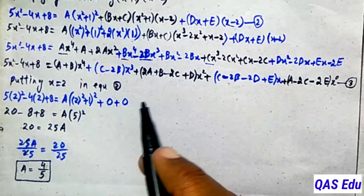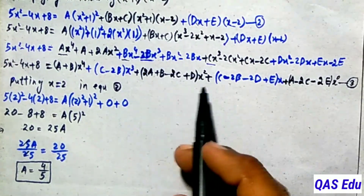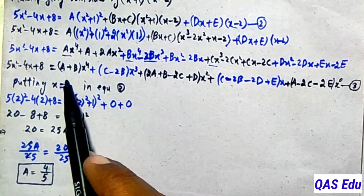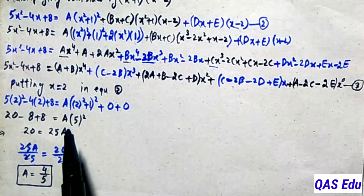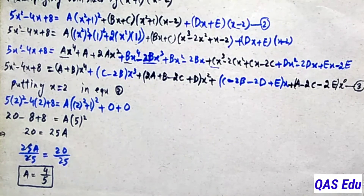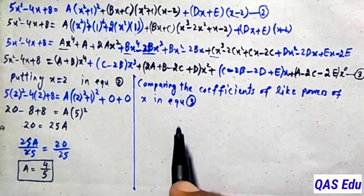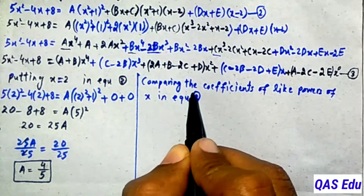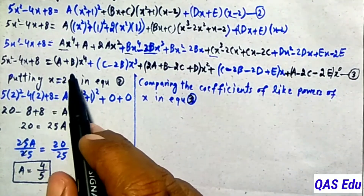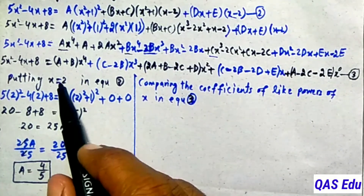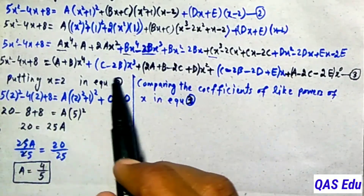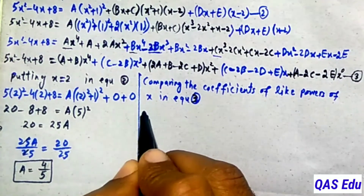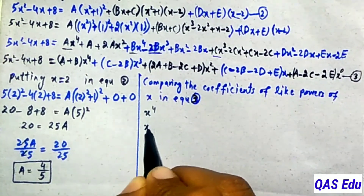Comparing the coefficients of like powers of x in equation number 3: we compare x to the power 4, x to the power 3, x to the power 2, x to the power 1, and x to the power 0. This will give us enough equations to determine all the remaining constants A, B, C, D, E.